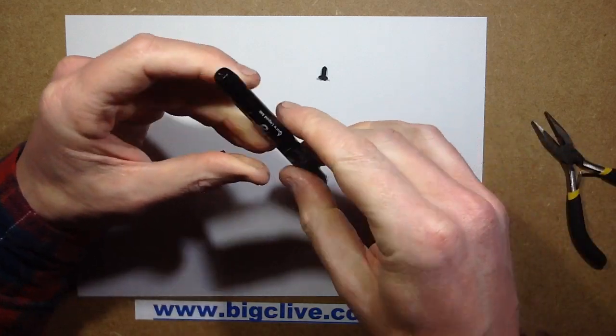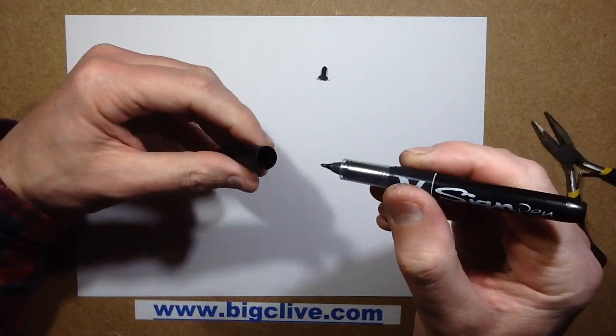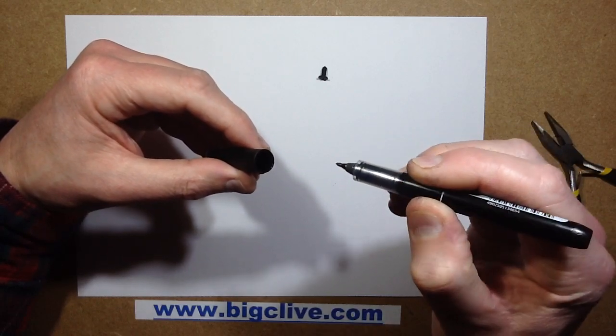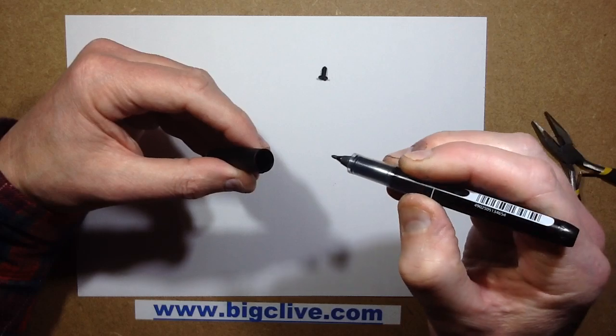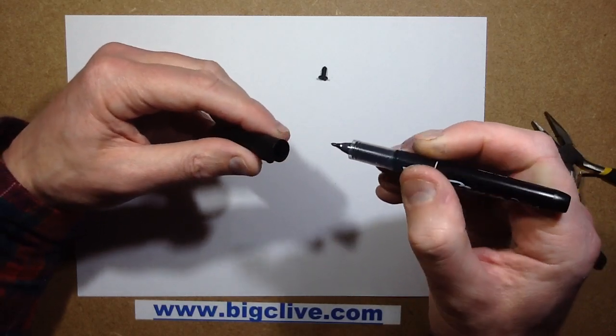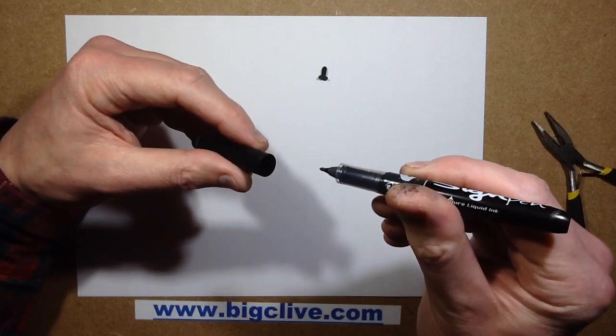And then, theoretically, after this has been allowed to wick for a while, that ink should come down and it should start writing properly again. So that should be interesting to find out. I'll leave a note in the description of the video just to tell you how well it worked.